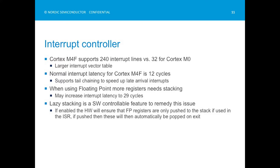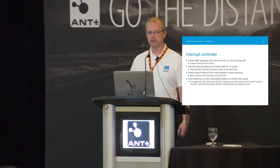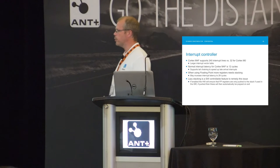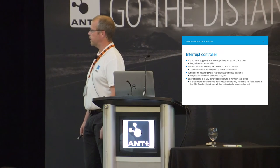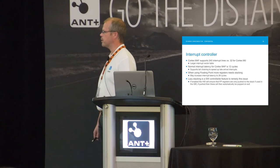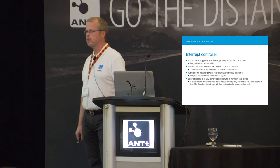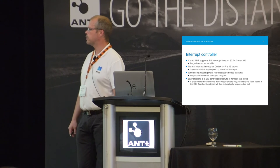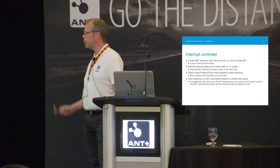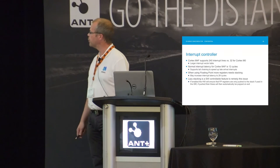Interrupt controller: the M4 supports 240 interrupts compared to 32 that we had on the M0/nRF51, so it's much bigger. Latency is 12 cycles, and it also supports tail-chaining. You need to pay attention when using floating point, because it needs to push more registers. There may be an issue on the early software stack where an application using floating point doesn't support it correctly.